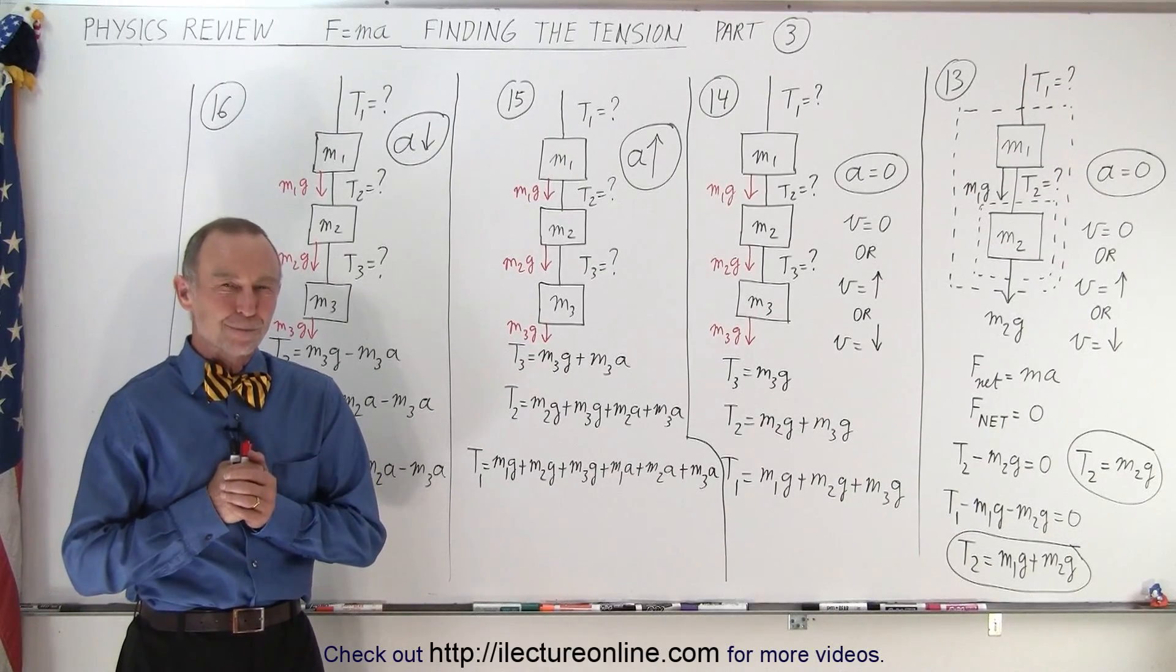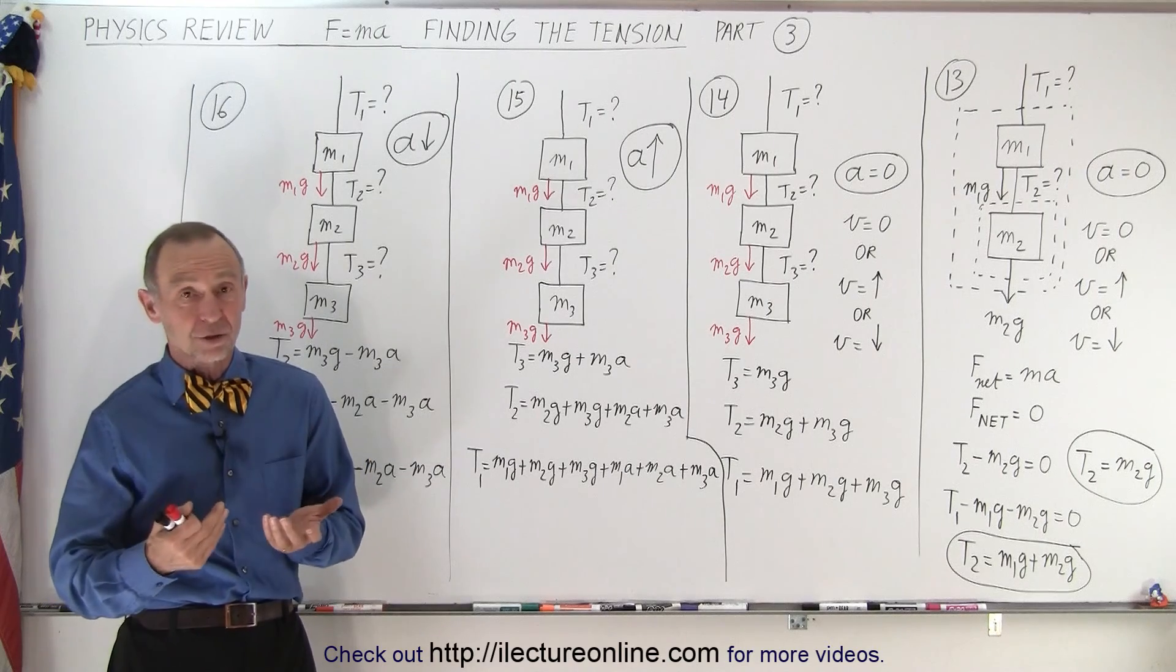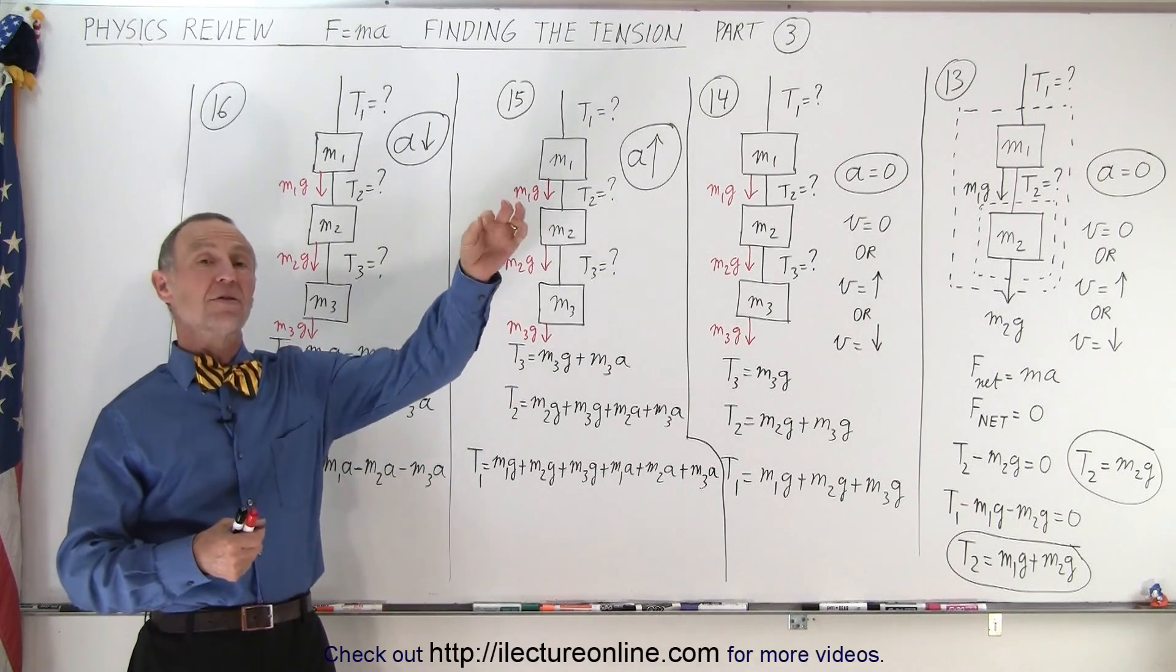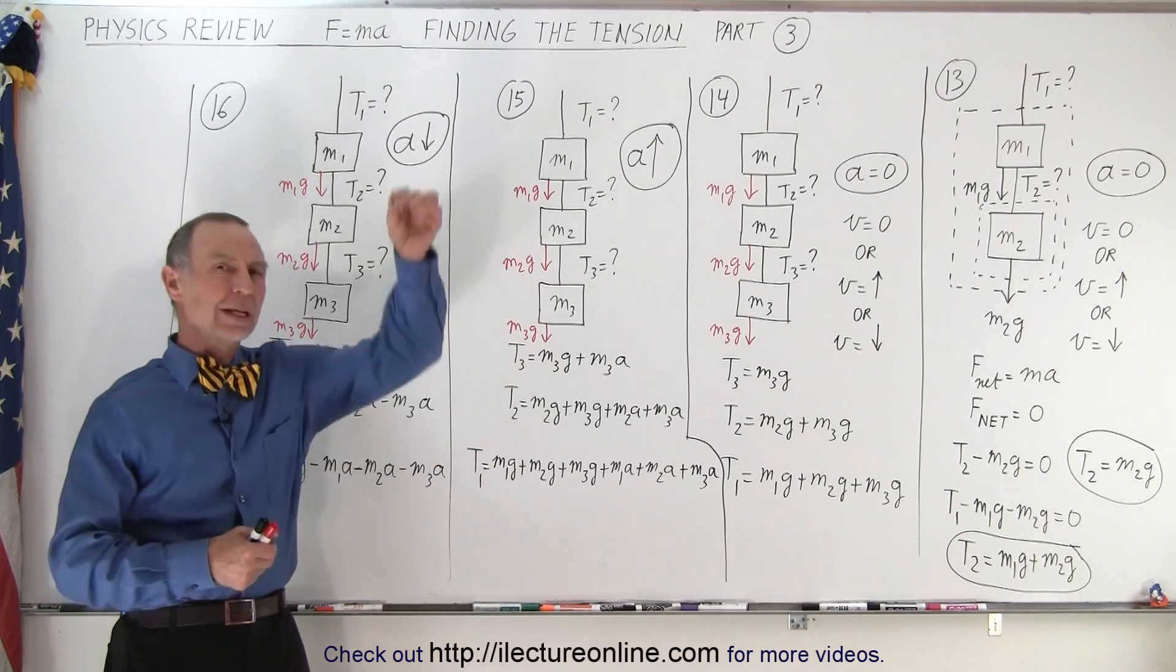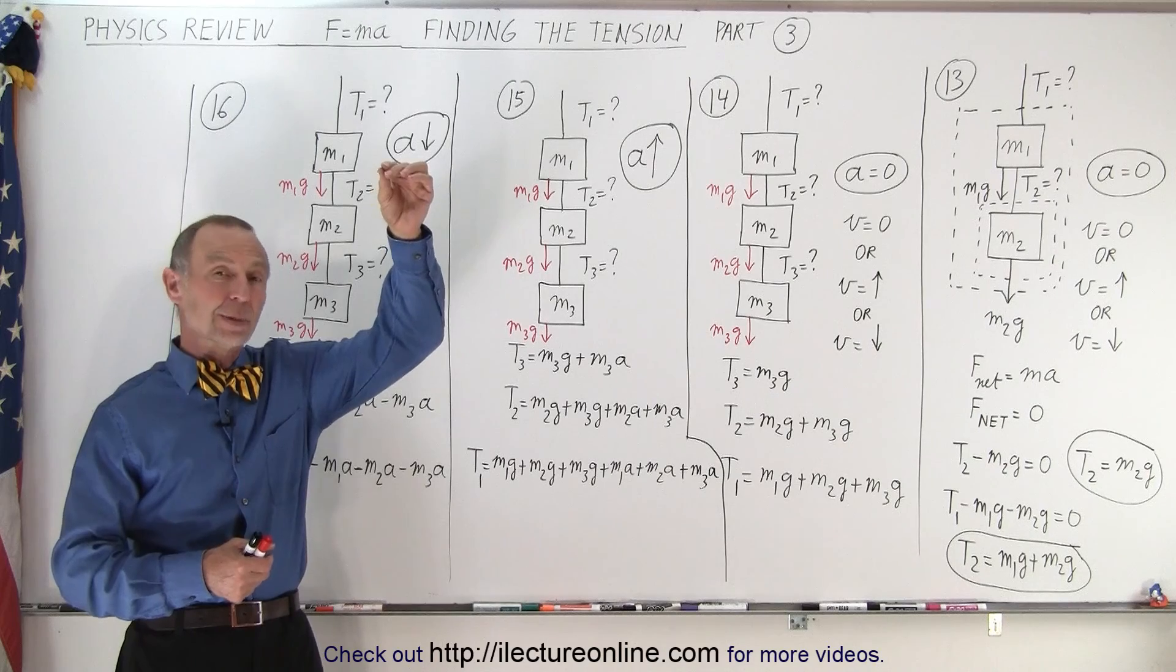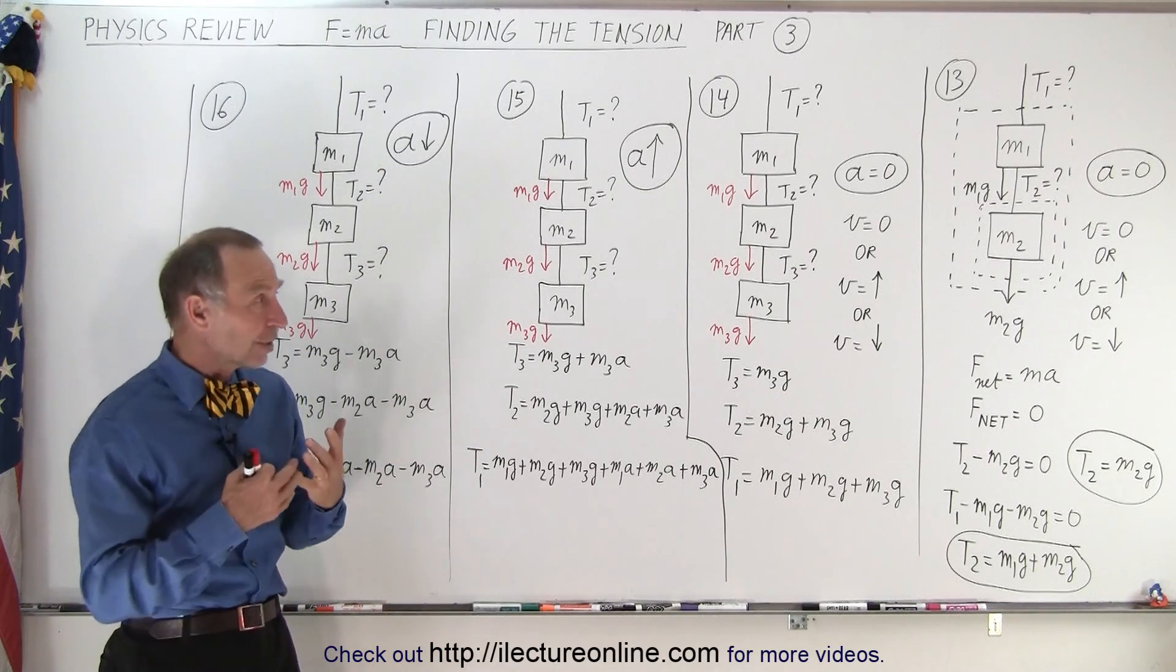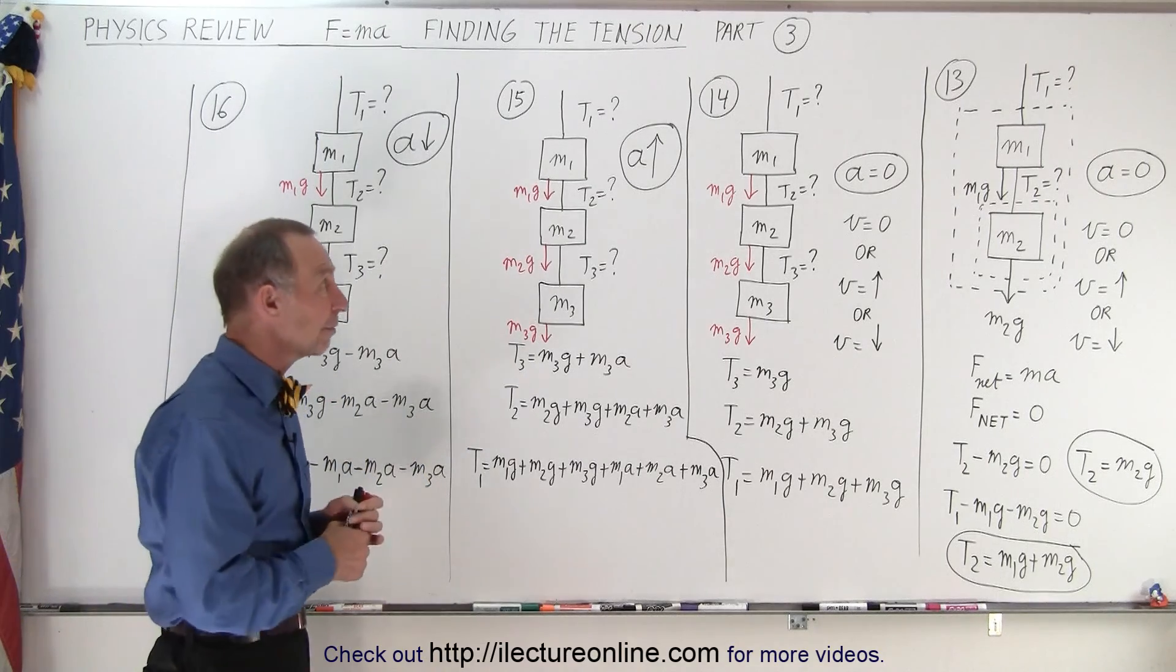Welcome to our lecture online. So what do we do if there's more than one object hanging from a string, and the string is either held steady, or being pulled up at a constant speed, or allowed to move down at a constant speed, or being accelerated at a constant acceleration, or being accelerated downward at a constant acceleration? Here are the examples that we need in order to figure out how to calculate the various tensions.